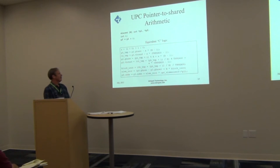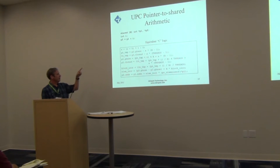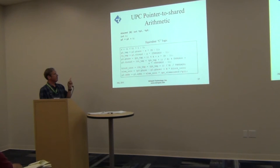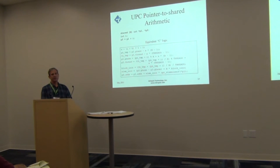This is the general form of pointer arithmetic, which can be simpler. If b were the default value of 1, or 0 (a different UPC use case), then many of the divides and remainders would fall away. The compiler is aware of all this and expands shared pointer arithmetic in a similar fashion. The compiler knows to lower this into normal C semantics.